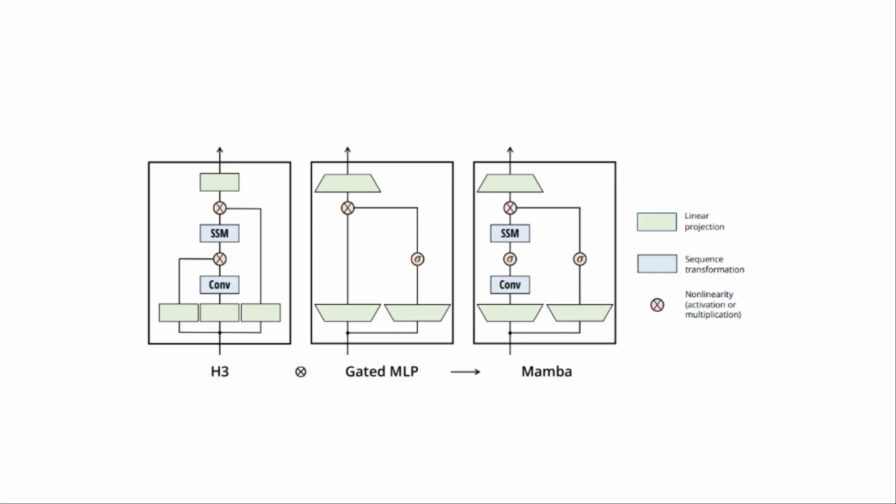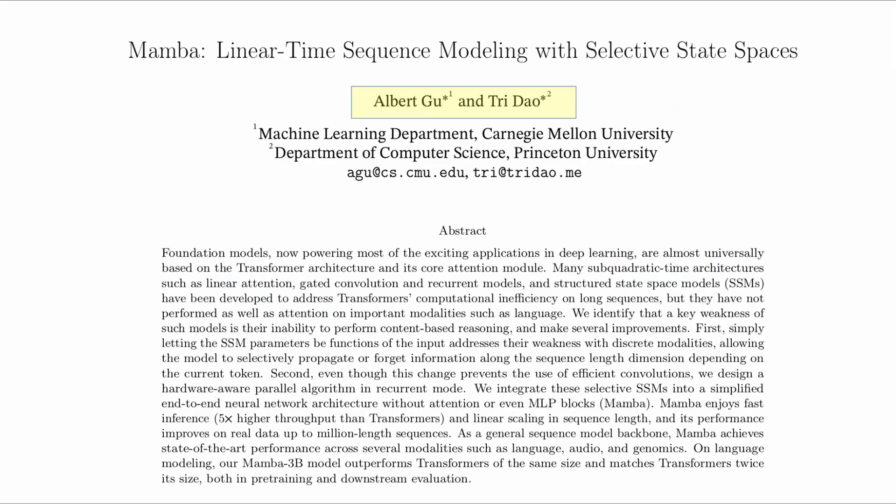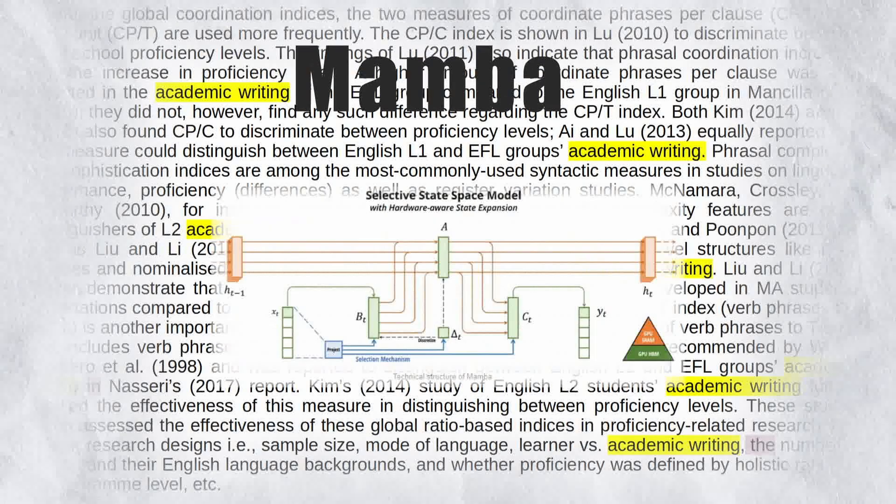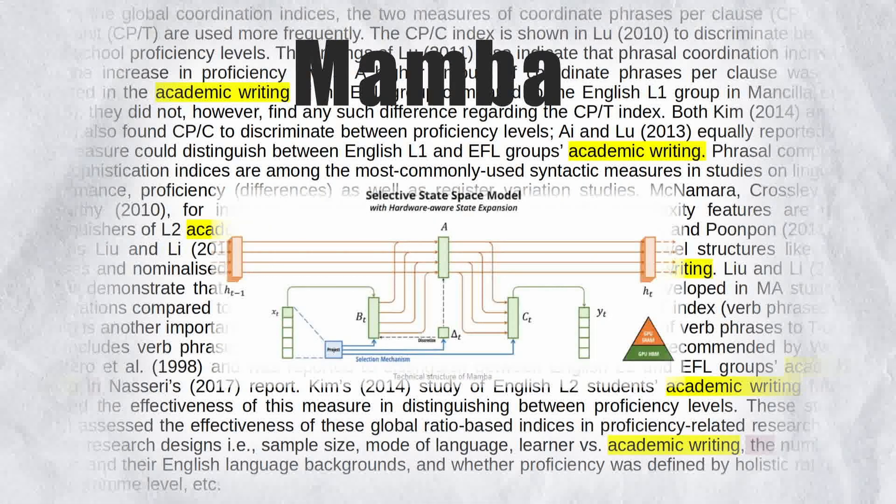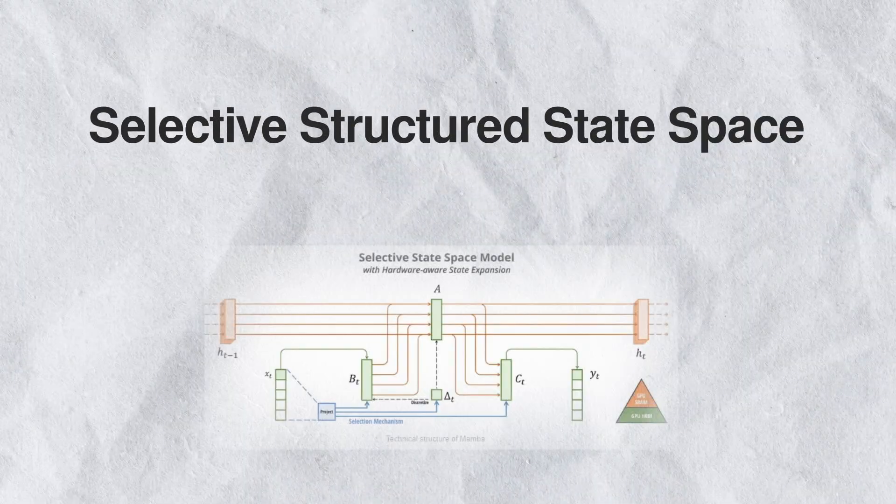Mamba's overall architecture combines the traditional state space model units for sequence processing with a more modern multi-layer perceptron unit, making it ideal for analyzing sequences of data such as natural language and genomics. The model designers claim that it can process long sequences without losing sight of the relevance and the context due to its selective approach.